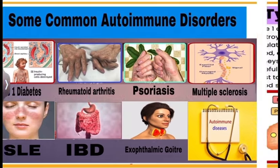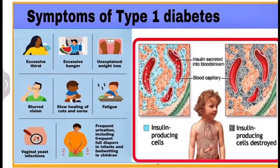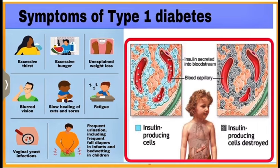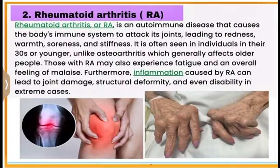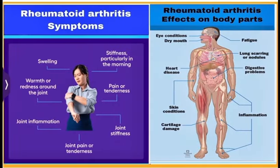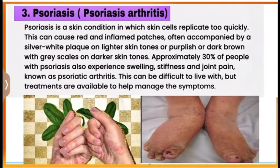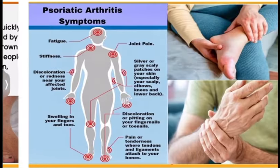Number one: Type 1 diabetes and its symptoms. Number two: rheumatoid arthritis and its symptoms. Number three: psoriasis and its symptoms.